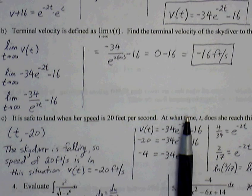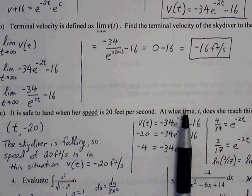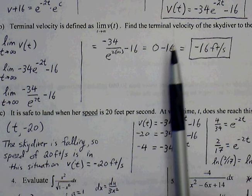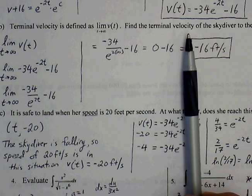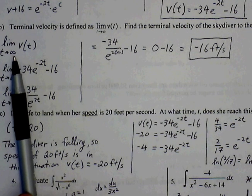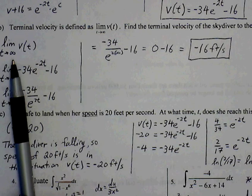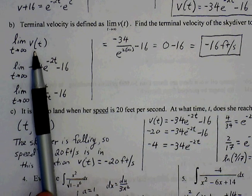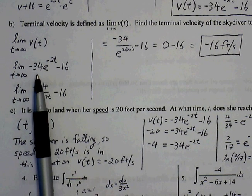Part b, terminal velocity is defined as the limit of v(t) as t approaches infinity. Find the terminal velocity of the skydiver to the nearest foot per second. So we're essentially finding the limit of v(t) as t approaches infinity. So let's rewrite, let's write the v(t) function here.